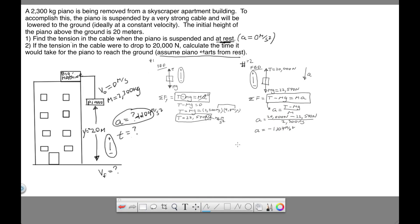Now that we have the acceleration, we could use y equals 1.5 a t squared plus v initial t. That's the first kinematic. We know that the initial velocity is 0.